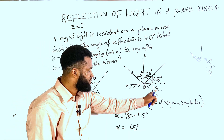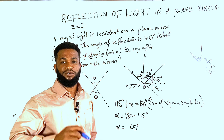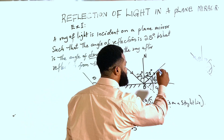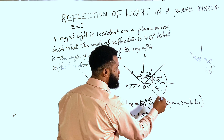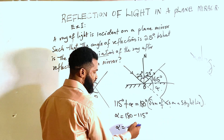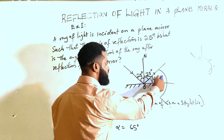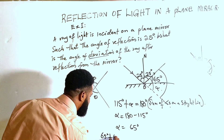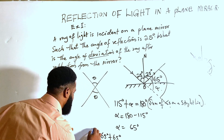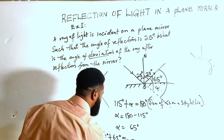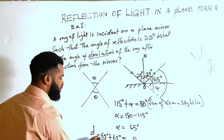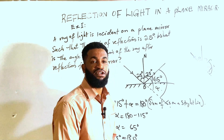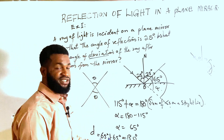So this angle is 65 degrees. Deviation is from the reflected ray down to the path of the incident ray. If this is 65 degrees and this is 65 degrees, then 65 plus 65 equals 130 degrees. So the angle of deviation is 130 degrees.